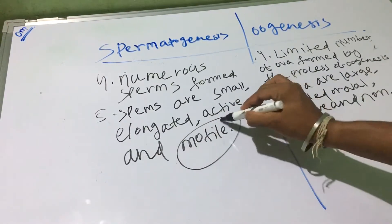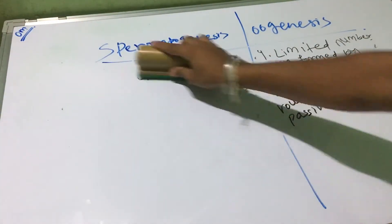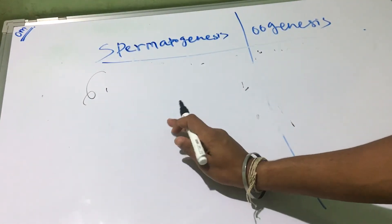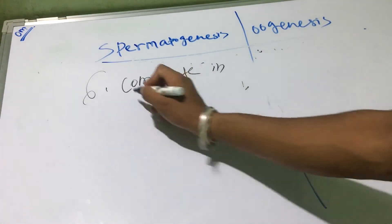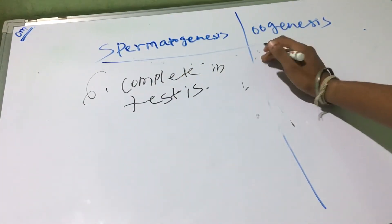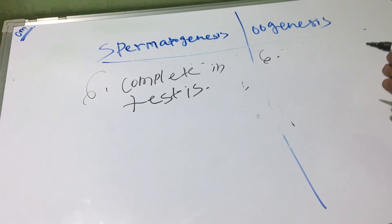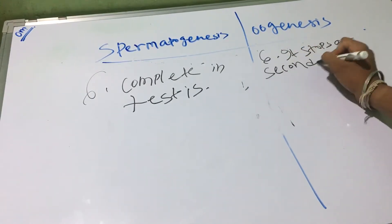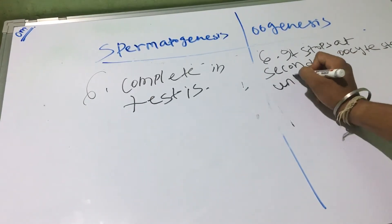Motile means which can move from one place to another place. In case of non-motile, it cannot move from one place to another place. The sixth point: in spermatogenesis, this process is complete in the testis, whereas in oogenesis, this process stops at the secondary oocyte stage until fertilization.